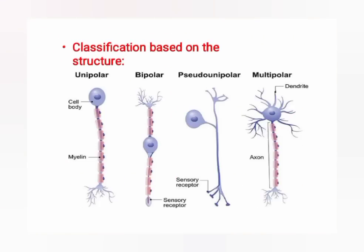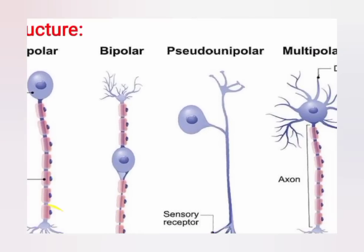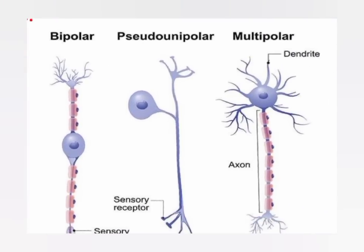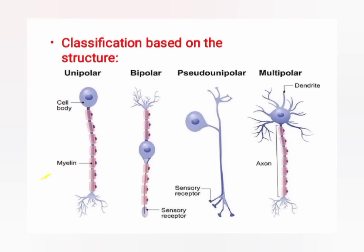Again showing the structure: there is the cell body and myelin sheath. The structures shown include unipolar, multipolar, bipolar, and pseudounipolar types.